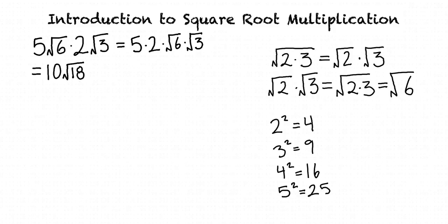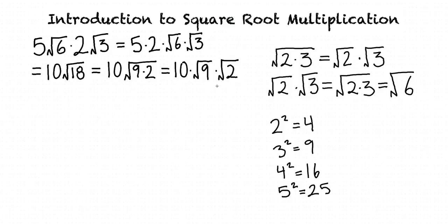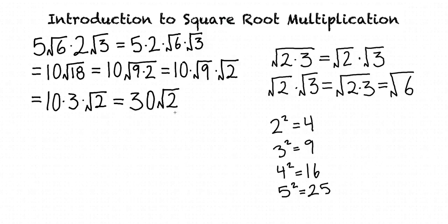Now what should we do? Let's check to see if the square root of 18 can be simplified — we need to see if there are any square numbers that divide into 18. In this case, 9 is a square number that divides into 18, so we can rewrite this as 10 times the square root of 9 times 2, which equals 10 times the square root of 9 times the square root of 2. Since 3 is the square root of 9, we can write this as 10 times 3 times the square root of 2, which equals 30 times the square root of 2.